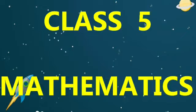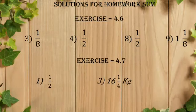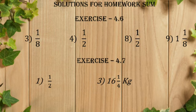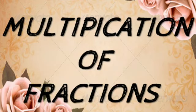Hello children, welcome to Class 5 Mathematics. Let us see the next part in fractions — the solutions for the homework sums. Exercise 4.6: third sum 1 by 8, fourth sum 1 by 2, eighth sum 1 by 2, ninth sum 1 and 1 by 8. Solutions for exercise 4.7: 1 by 2 for the first sum, and 16 and 1 by 4 kg for the third sum.